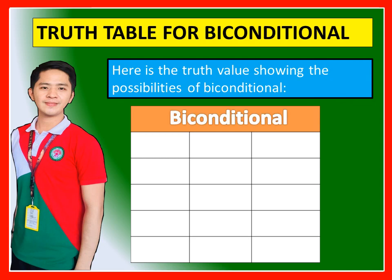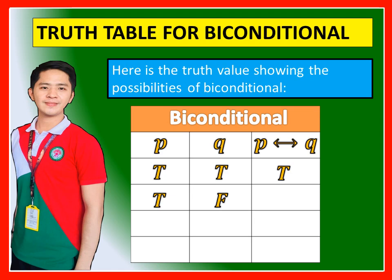Truth table for biconditional: There are three columns — for P, for Q, and for P if and only if Q. In biconditional, if both components have the same value, the result is true; otherwise it is false. So true-true gives true, true-false gives false, false-true gives false, and false-false gives true.